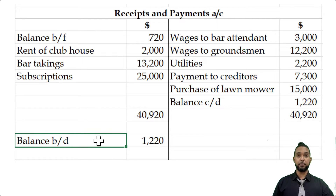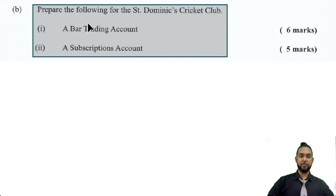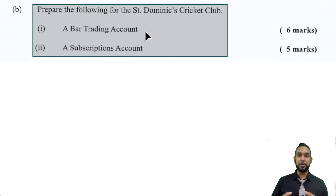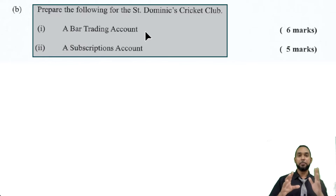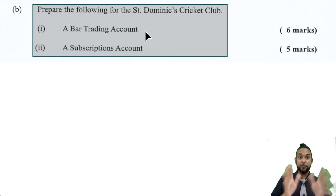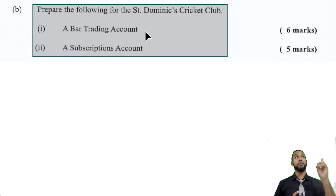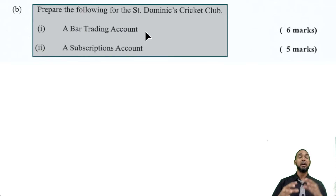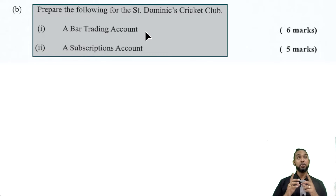Part B asks us to prepare a bar trading account and a subscriptions account for St. Dominic's Cricket Club. The bar trading account is simply a trading account for the bar — the word 'bar' in front used to confuse a lot of people, but it's just a trading account for a bar. If you're rusty on trading accounts, I'll put a card up there with a link. I break things down into step-by-step pieces rather than asking you to memorize a whole format at once.